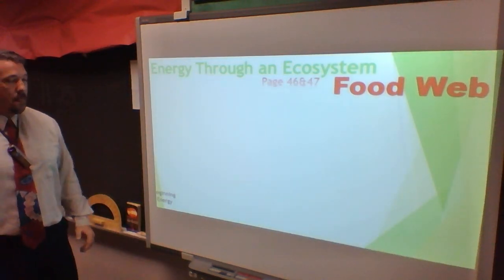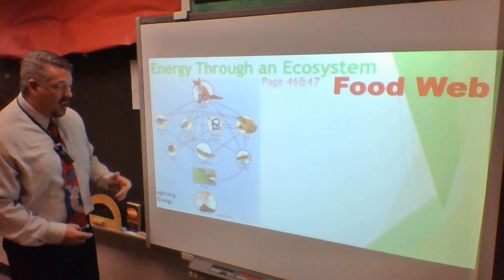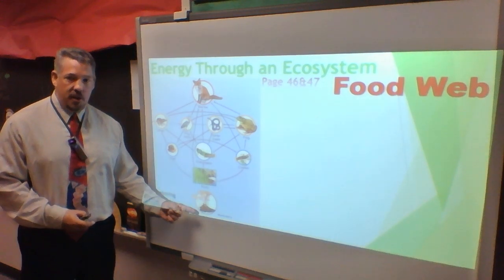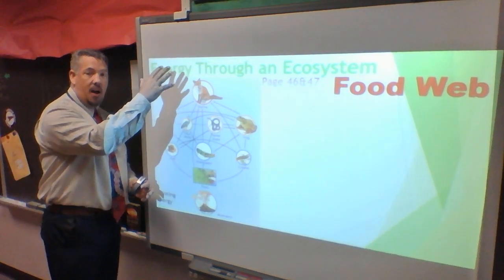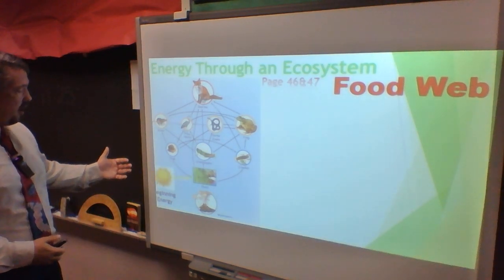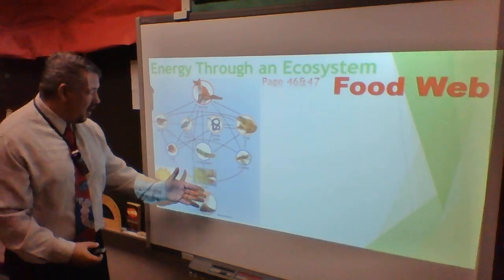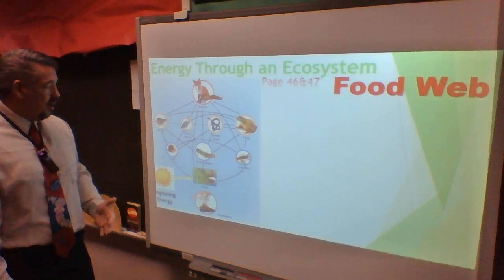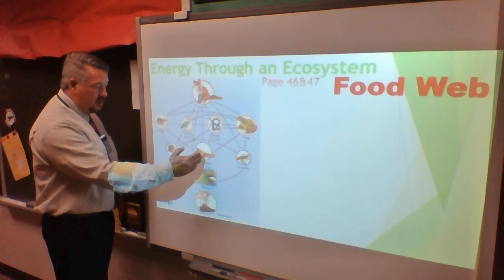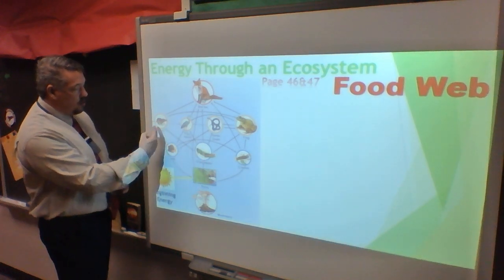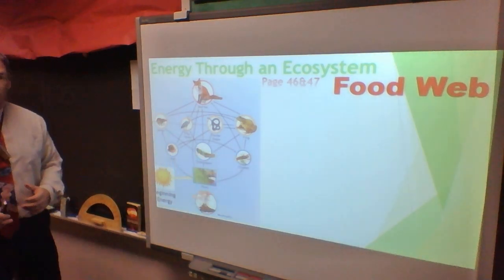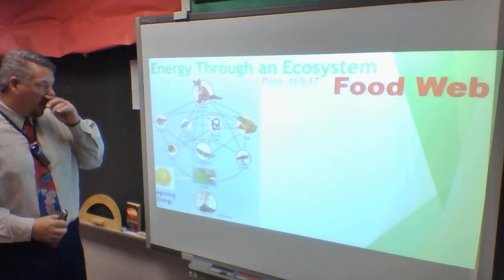A food web has different lines and arrows that can get confusing. Notice there are no arrows to the decomposer in the diagram because everything that dies and rots is broken down by decomposers — that's understood. Energy flows from the sun to the plants, which convert it through photosynthesis, then to the next level of organisms. From the grass, the grasshopper can be eaten by a shrew, a heron, a garter snake, or a frog. One important point about arrows in food chains and food webs: